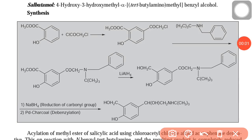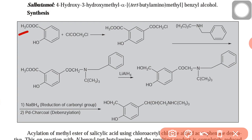The synthesis of salbutamol starts with the salicylic acid ester. This is the methyl group, and this is salicylic acid with COOH, OH, and a benzene ring. This is the methyl ester of salicylic acid, and this is chloroacetyl.